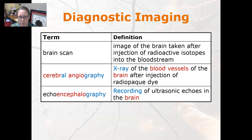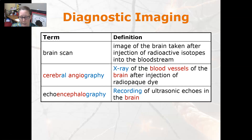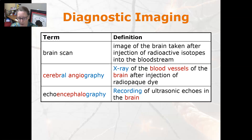This is diagnostic imaging. A brain scan is an image of the brain taken after an injection of radioactive isotopes into the bloodstream. A cerebral angiography is an X-ray of the blood vessels of the brain after the injection of radio-opaque dye. An echoencephalography is a recording of ultrasonic echoes in the brain.